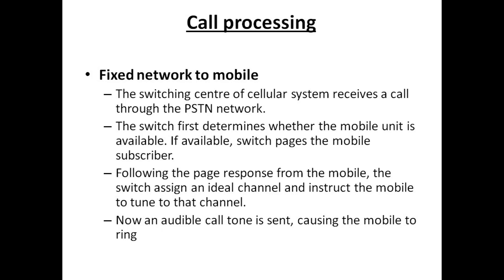The switching center first receives a call from the LAN phone, then determines whether the mobile phone unit is available or not. If available, the switch pages the mobile phone subscriber. Following the page response from the mobile, the switch assigns an idle channel and instructs the mobile to tune to that channel. An audible ring tone is sent, causing the mobile phone to ring. This is how fixed network to mobile communication works.